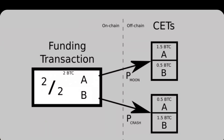So let's talk in more detail about how this actually works. As we can see in this handy diagram, things get started by the construction of a funding transaction to create, in this case, a two-of-two multi-sig. So let's say there are two participants, Alice and Bob, represented by A and B, and they're each putting in one Bitcoin into this funding transaction. They are betting on whether the price of Bitcoin in the next 24 hours is going to moon or it is going to crash. This dividing line in the middle is really important — it separates what the footprint is on-chain versus what is happening off-chain.